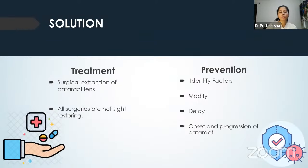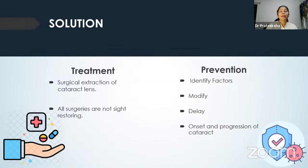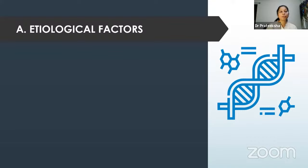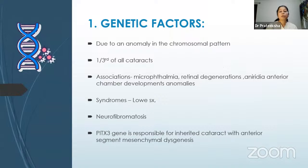Why is it important to discuss the etiology of cataract? We have only two solutions: surgical extraction, but the burden is enormous and not all surgeries are sight-restoring. The other option is prevention — always better than cure. By identifying modifiable risk factors, we can modify them to delay the onset and progression of cataract, thereby reducing the economic burden on society. That is why we study etiological factors in great detail.